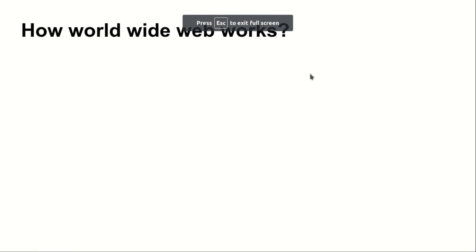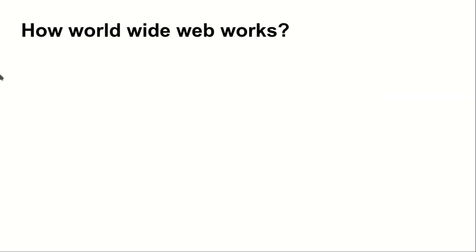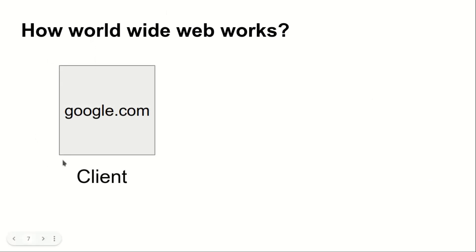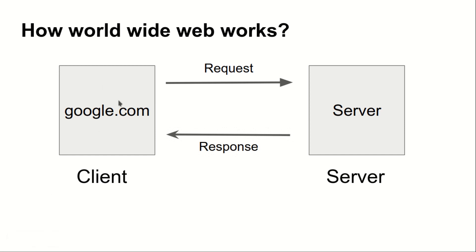Now the question arises: how does the World Wide Web work? Let's say you have a computer with a browser and you type google.com. When you click on google.com, it will send a request to the server. There are a bunch of servers for every company. This will send a request from your client to the server, and the server will respond to your computer with the google.com page.